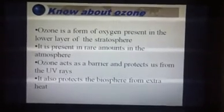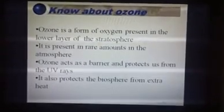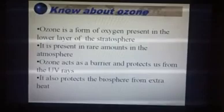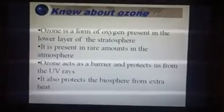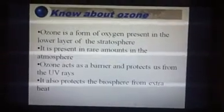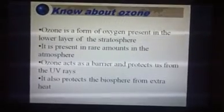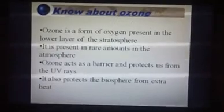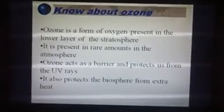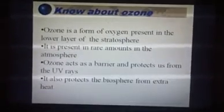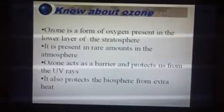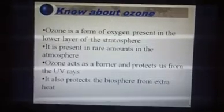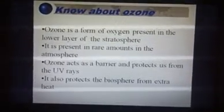Ozone is a form of oxygen present in the lower layer of the stratosphere, which is O3. It is present in rare amounts in the atmosphere. Ozone acts as a barrier and protects us from UV rays, and it also protects the biosphere from extra heat.